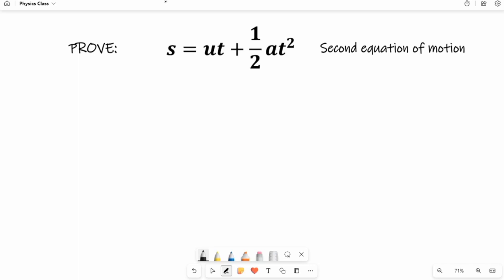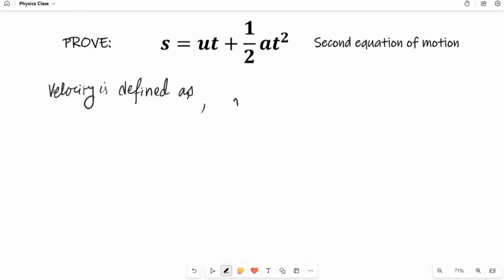First of all, we know that velocity is defined as v equals ds over dt. Now in the next step we can cross multiply it, so it will be ds equals v dt.